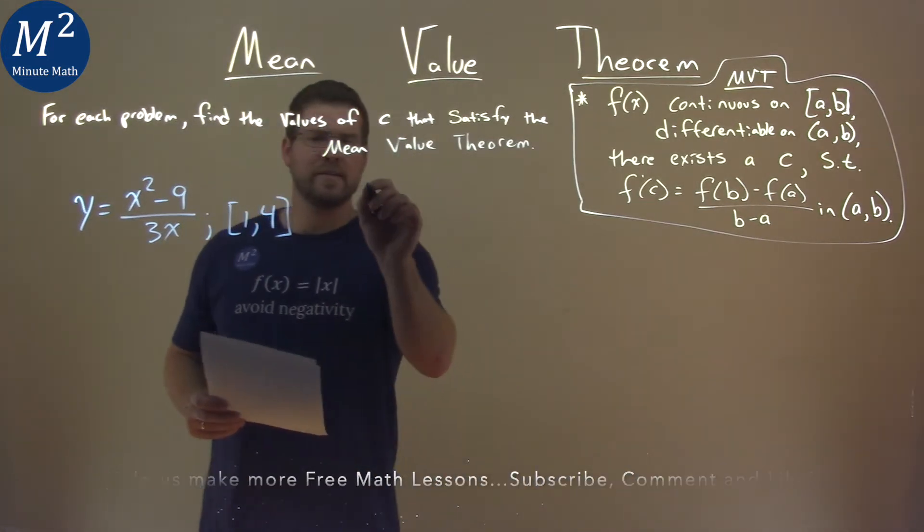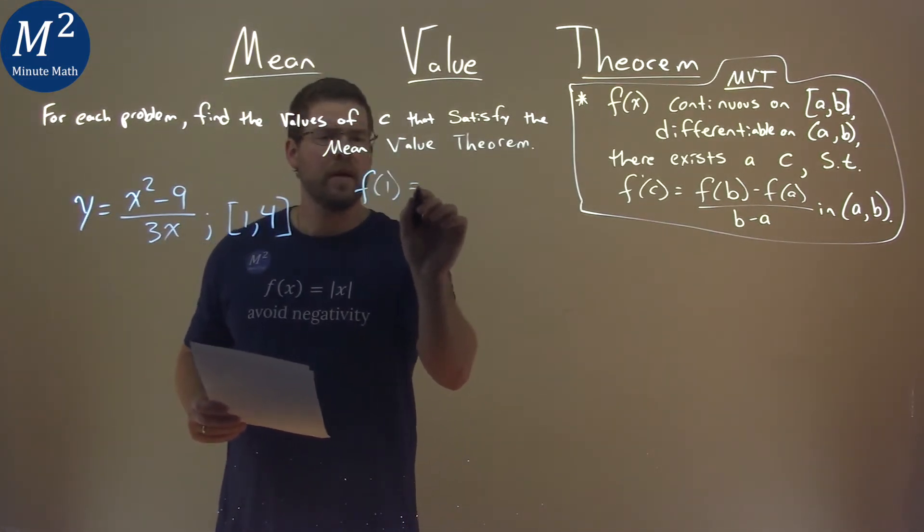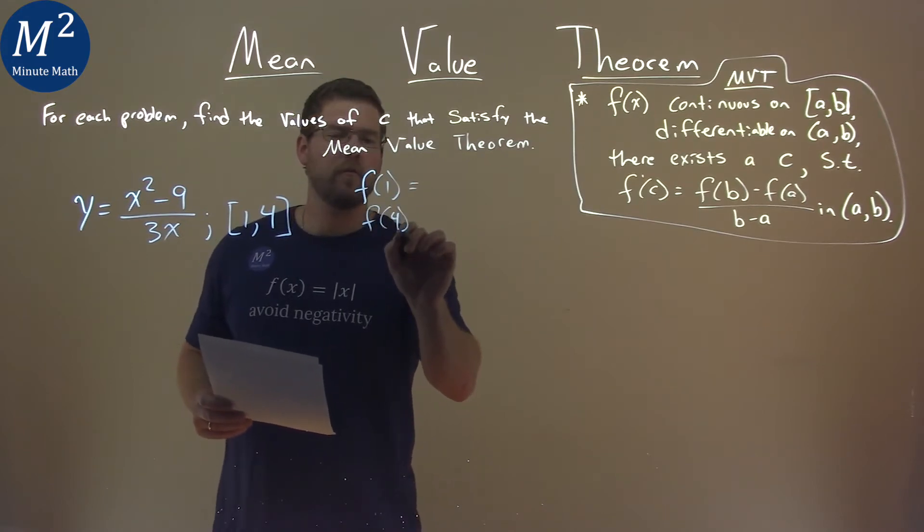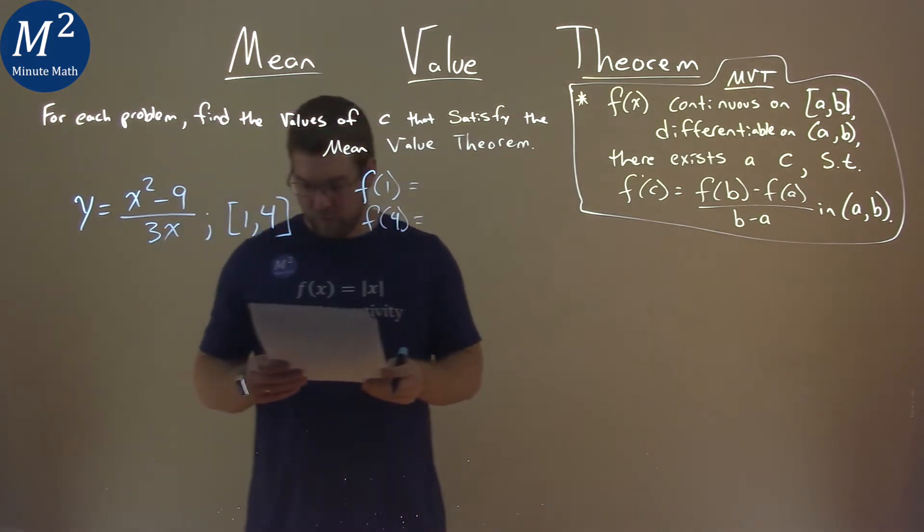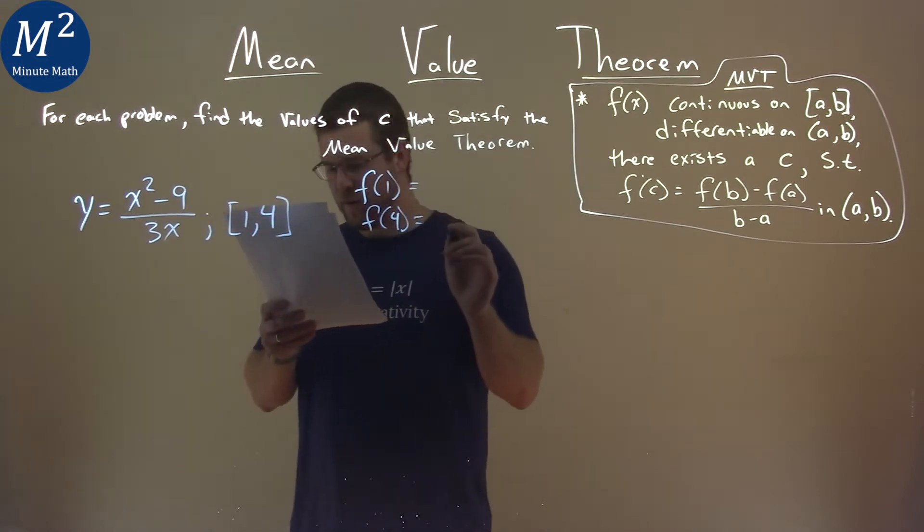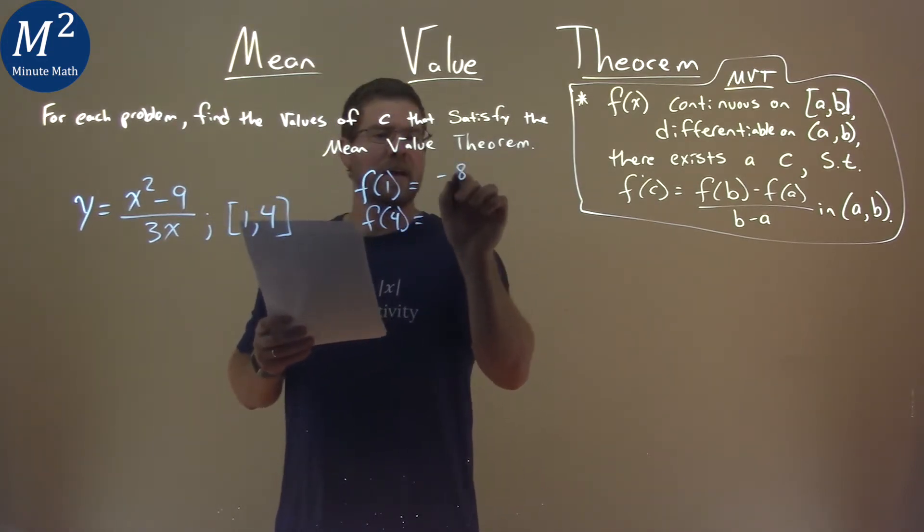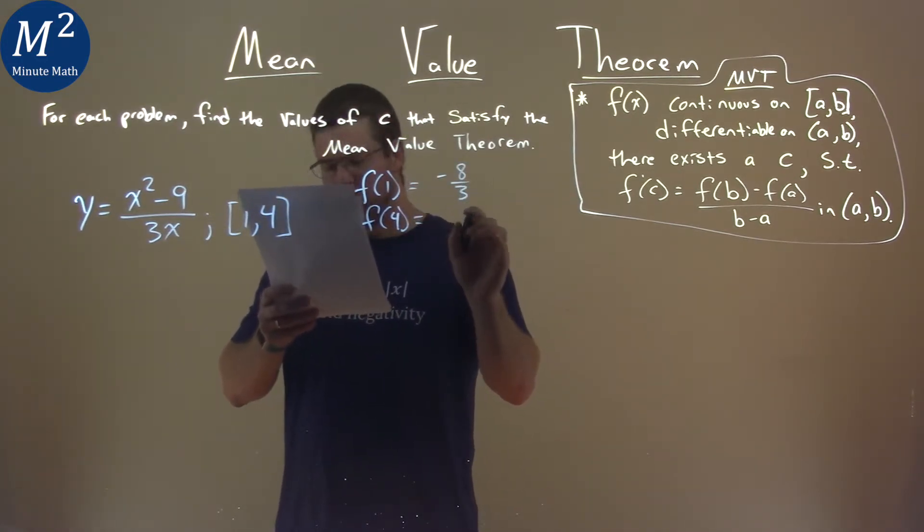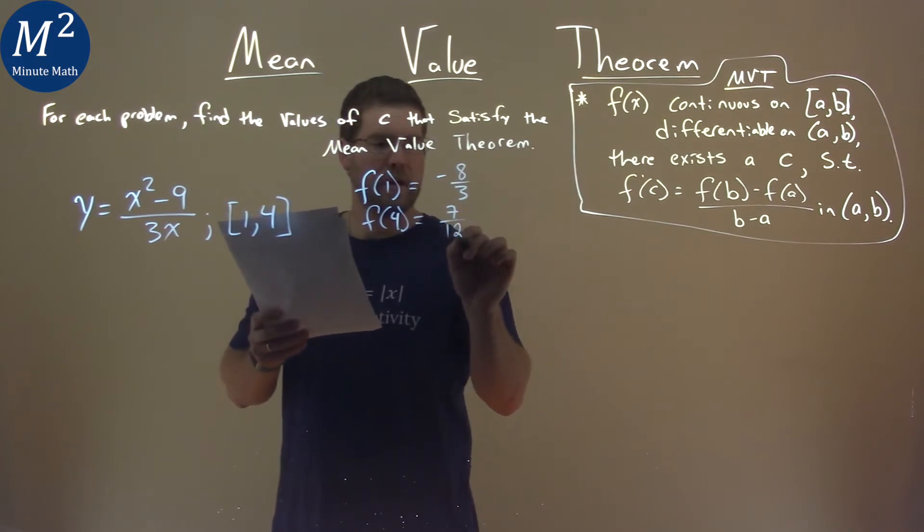Well, first thing I want to find is what is my f of 1 and my f of 4. We're plugging those values in for x of our original function right here, and I found them for you. f of 1 is negative 8 thirds, and f of 4 is 7 twelfths.